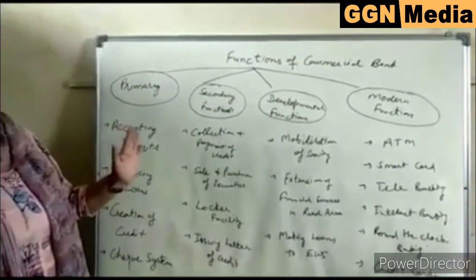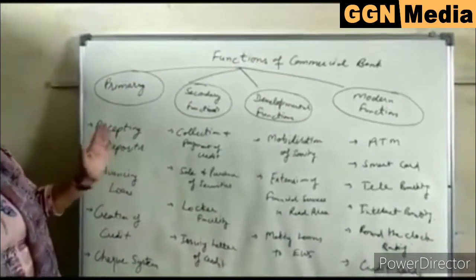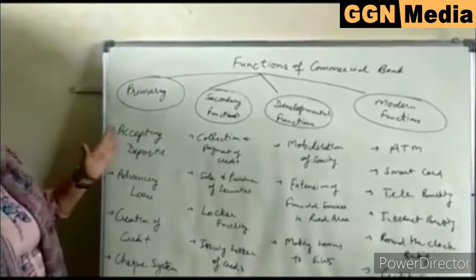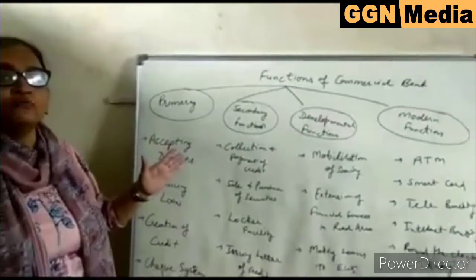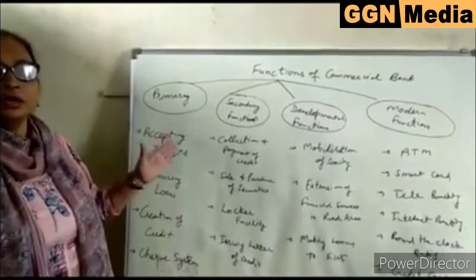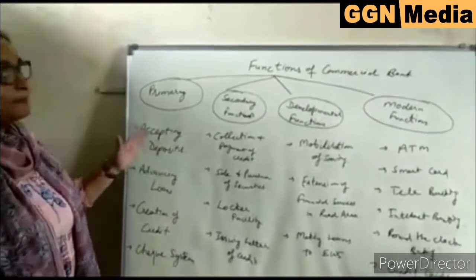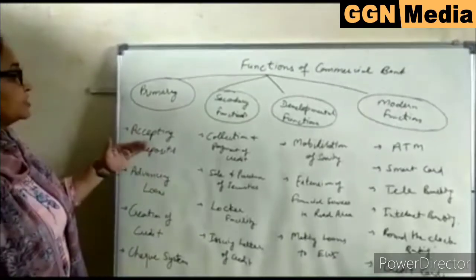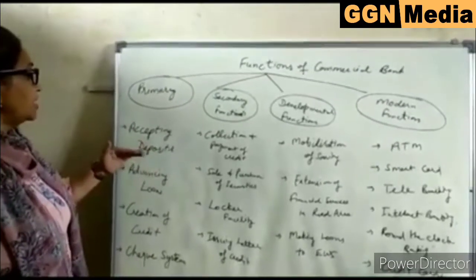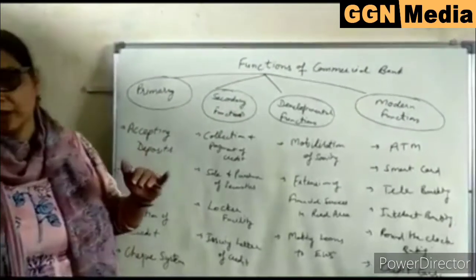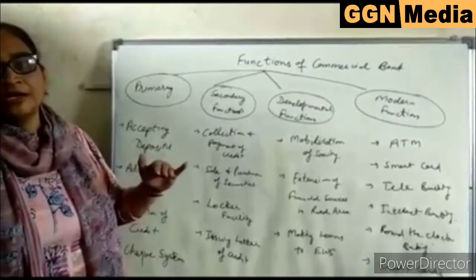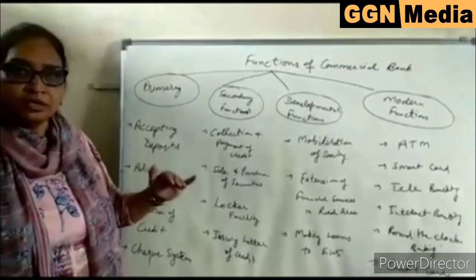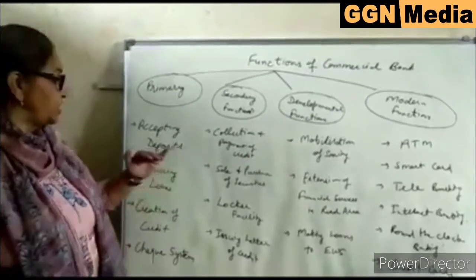The main and first function of a commercial bank is accepting deposits. This is a primary function and main source of income — accepting deposits from the public. These deposits are accepted in different types of accounts: saving account, current account, fixed account, and recurring deposit account.